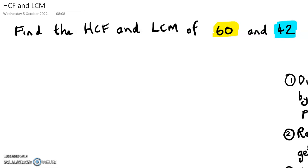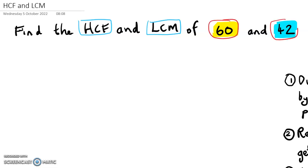In this video we're going to take a look at how to find the HCF or the highest common factor and the lowest common multiple or the LCM of a couple of numbers. In this case we're using the numbers 60 and 42, but they could be any two numbers. The method is still the same. We're going to find the HCF and the LCM more or less at the same time using the same five steps.